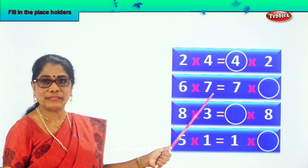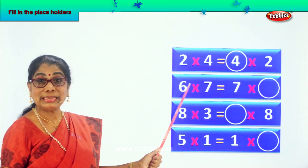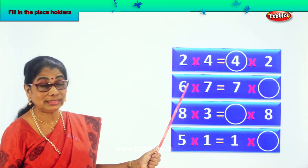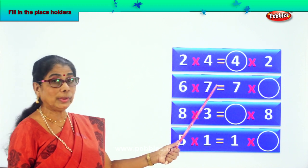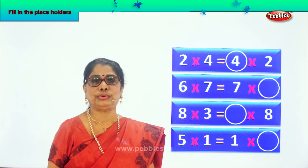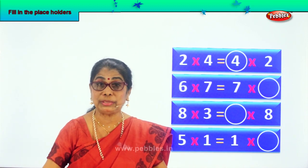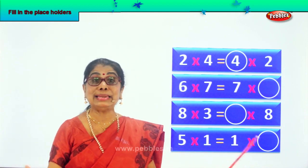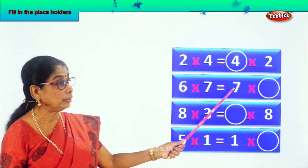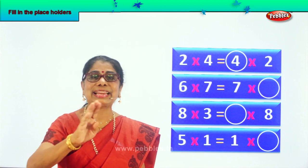Now look at this. 6 into 7. 6 into 7 is 42. Now what will give you — equal to 7 into what — will give you 42? Remember, this answer and this answer both have to be the same. The numbers are the same too. 6 into 7 is equal to 7 into 6.